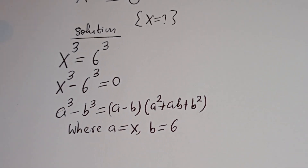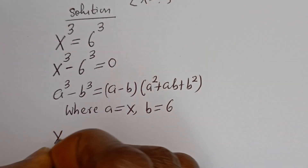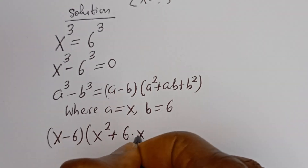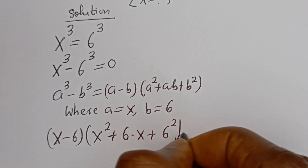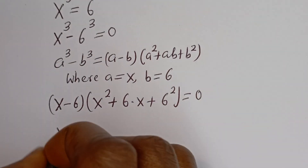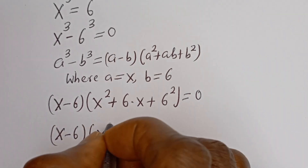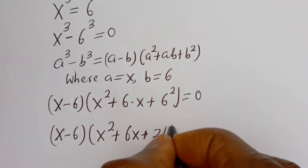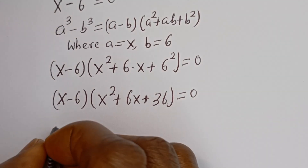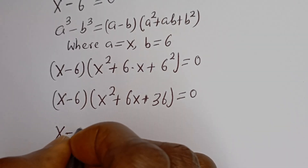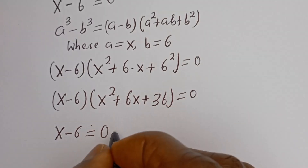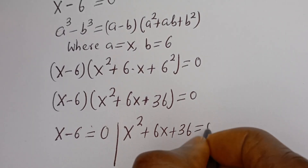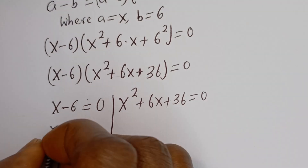Where a is equal to x and b is equal to 6, we have (x minus 6)(x squared plus 6x plus 36) is equal to 0. Then x minus 6 plus 36 is equal to 0. Here we have two cases: x minus 6 is equal to 0, or x squared plus 6x plus 36 is equal to 0. From the first case, x₁ is equal to 6.